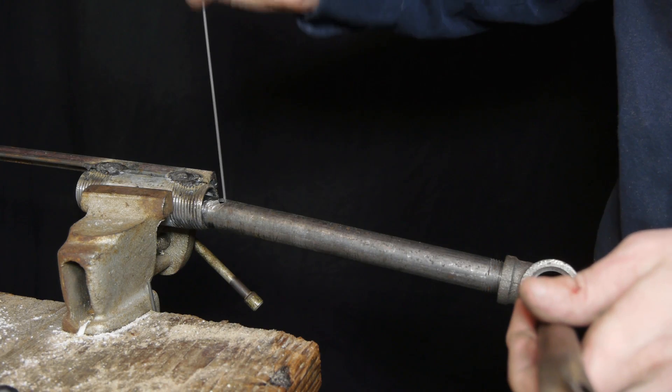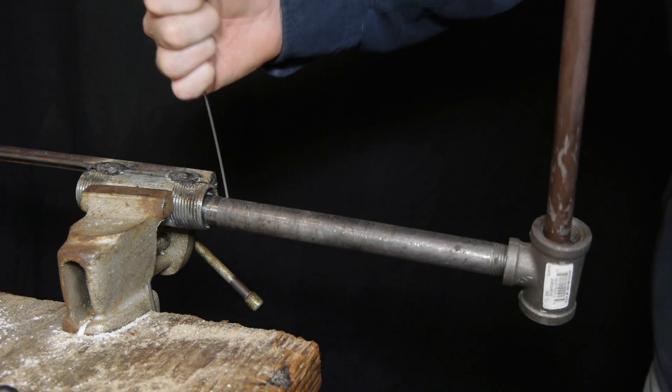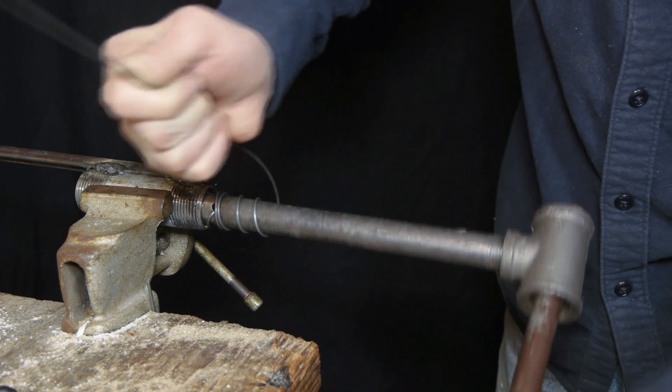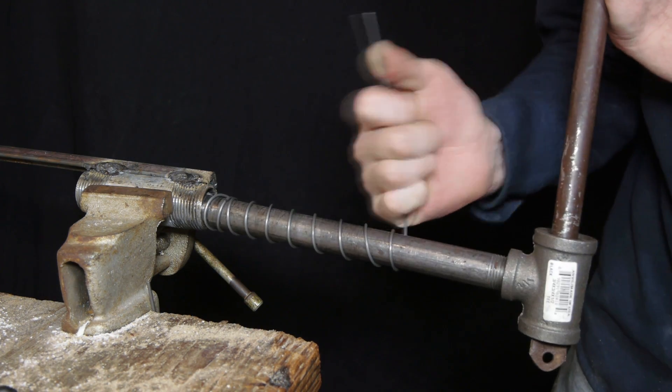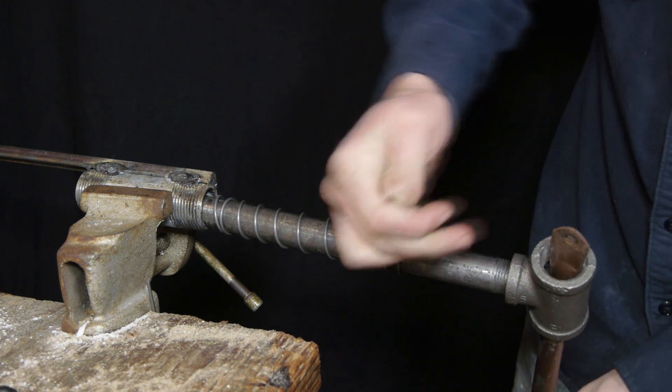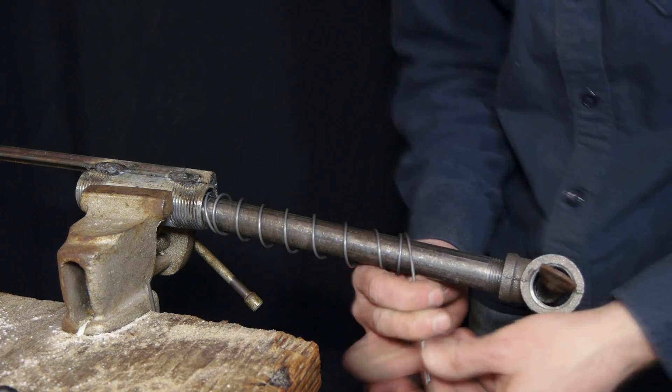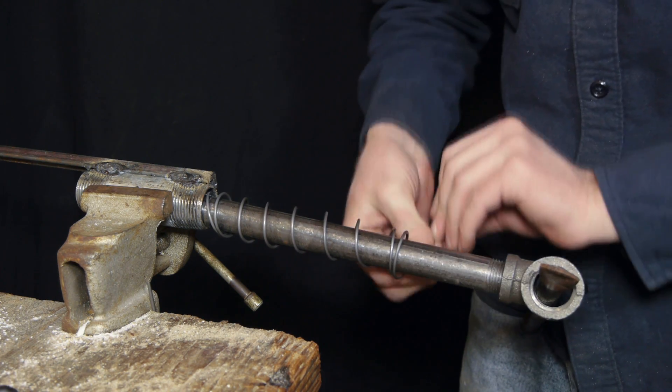As I mentioned earlier, the angle iron isn't necessary to make these springs. The end of the wire can simply be braced by hand, it's just a little more difficult. You also have to be even more careful once the winding is finished to release the tension gently. It would be a good idea to wear gloves for this.